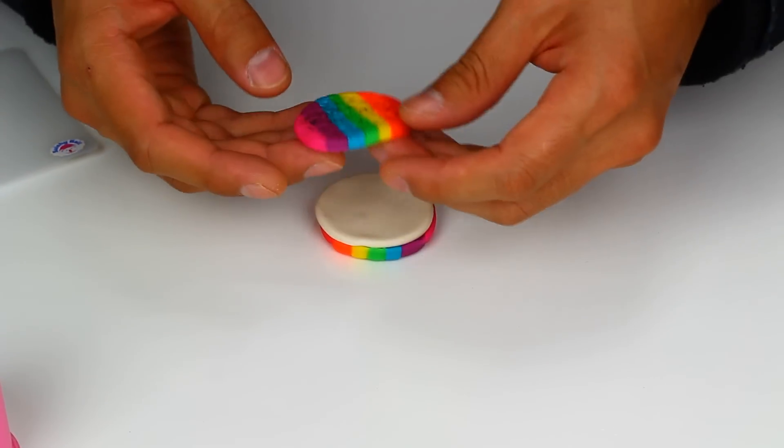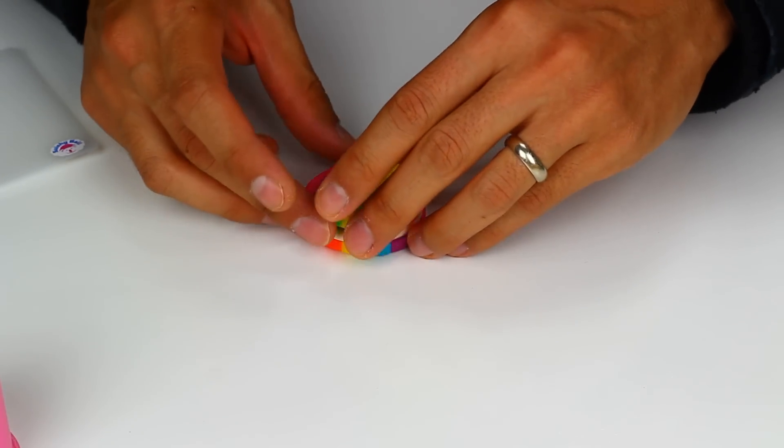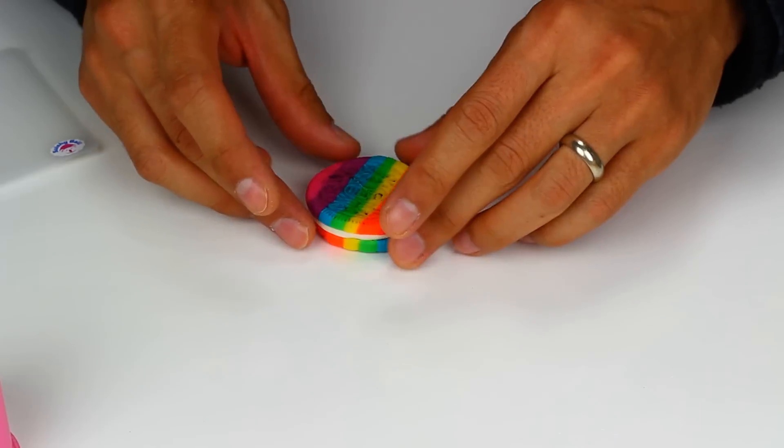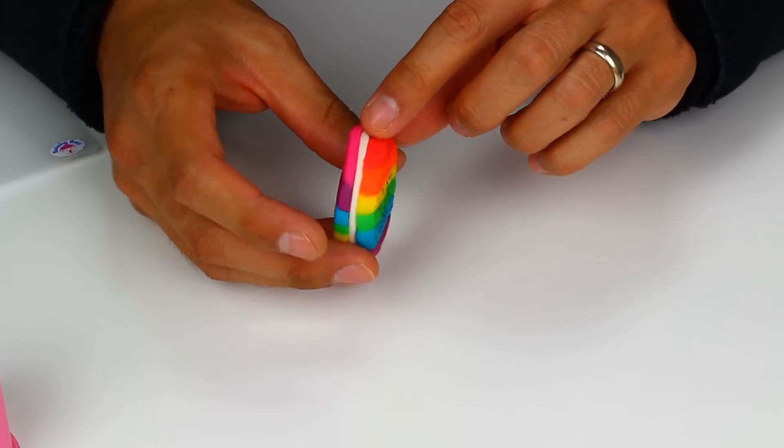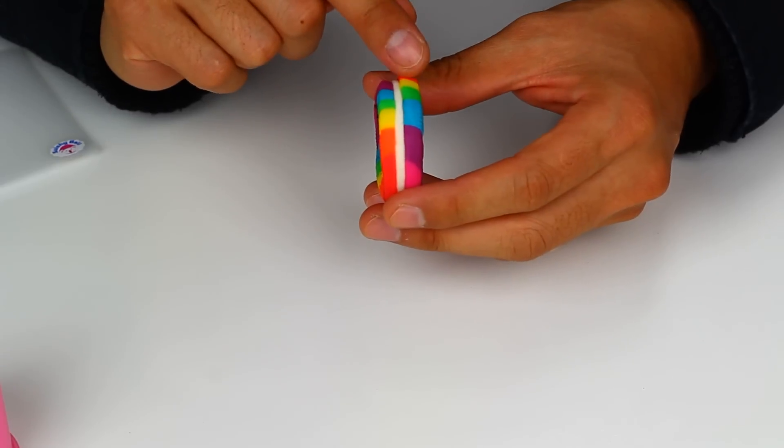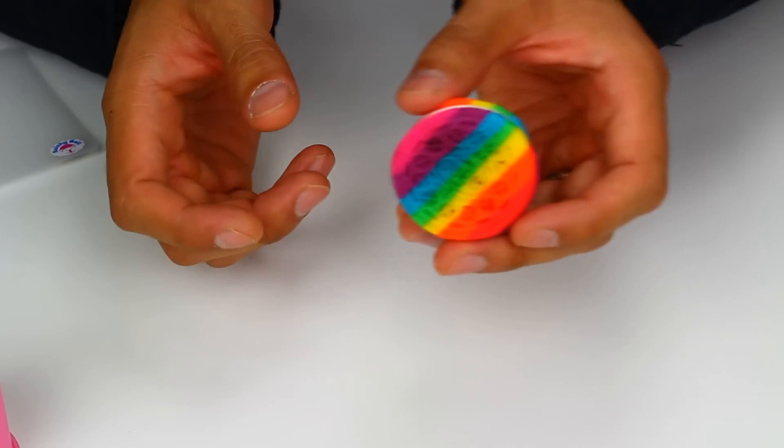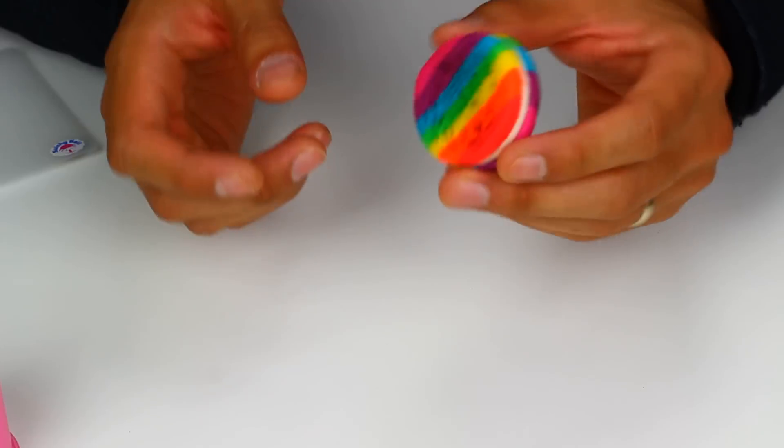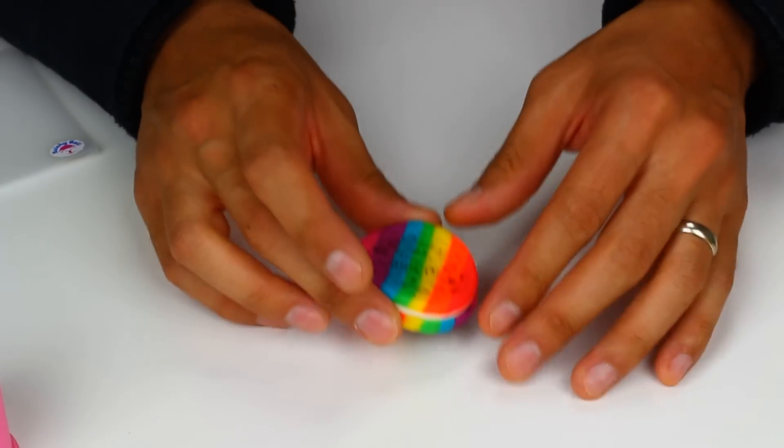The other side. Okay. And there we have our rainbow Oreo. This side is a little bit too thick, I think. But it's okay. There's our rainbow Oreo. With a little cookie crumb.